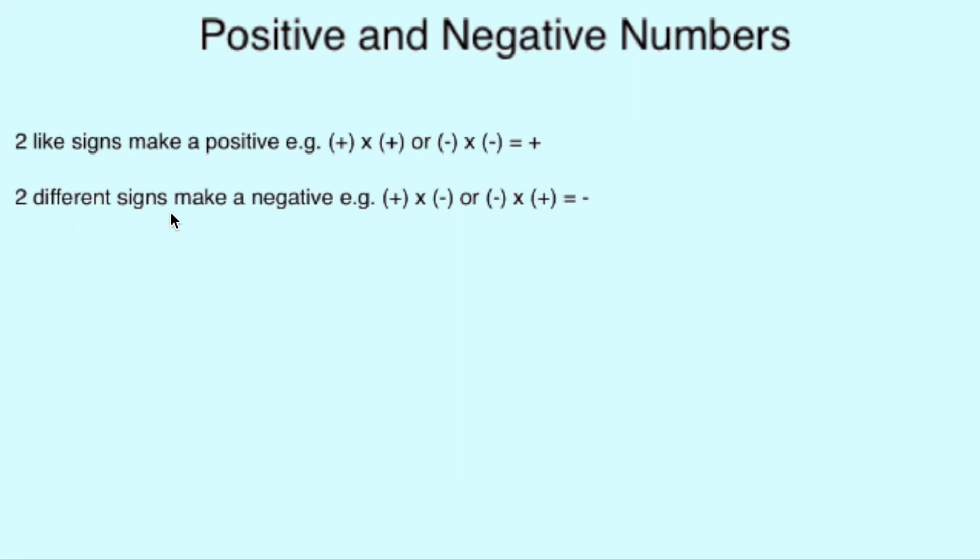Similar to before, two different signs make a negative. For example, a positive times a negative would make a negative, or a negative times a positive would also make a negative.